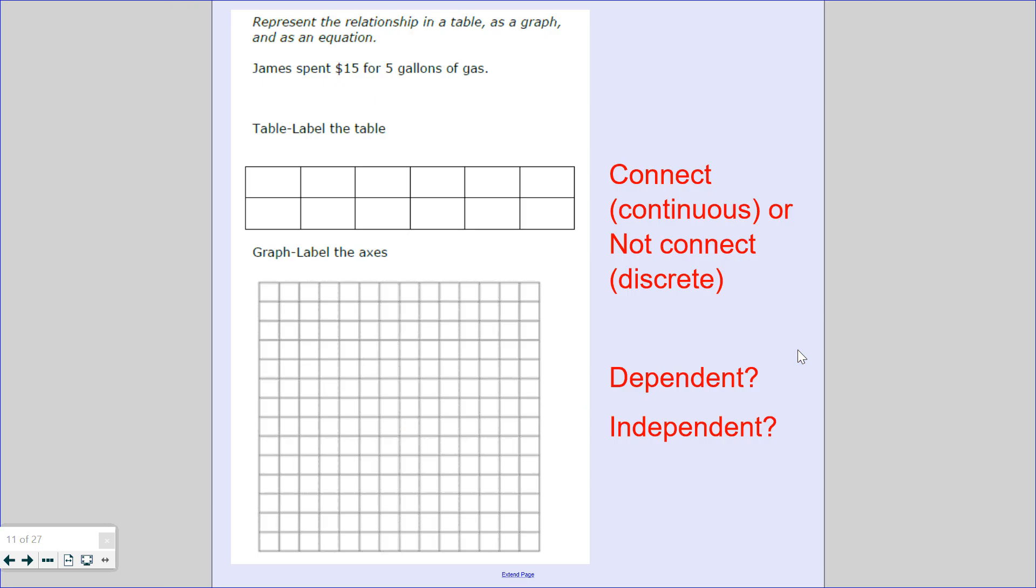So here's a new one. Here's a little one with less information that I'm sure you can fill it out. So represent the relationship in a table as a graph and as an equation. James spent $15 for 5 gallons of gas. Let's label the table. So this is gallons, this is spent. So 1, 2, 3, 4, 5, $15. So he spent $15 for 5 gallons of gas. So how much did he spend on 1 gallon of gas? 15 divided by 5 is 3. 2 gallons would be 6, 3 would be 9, 4 would be 12.